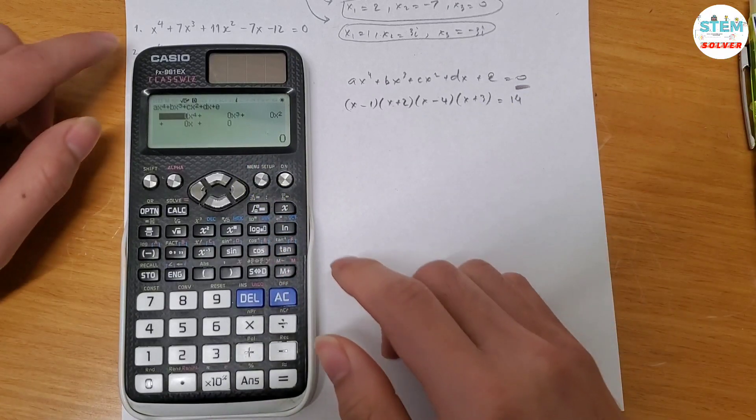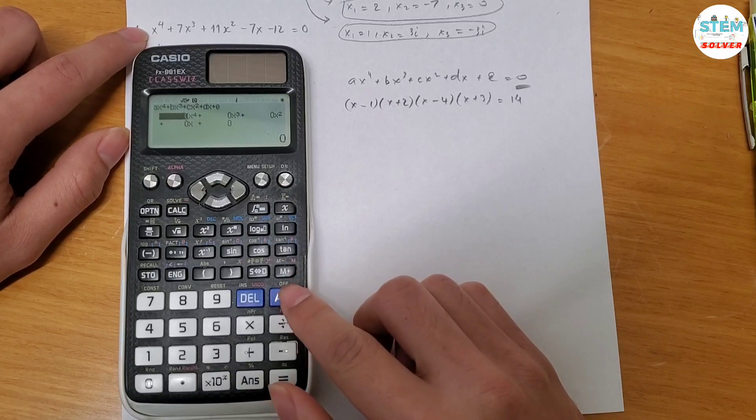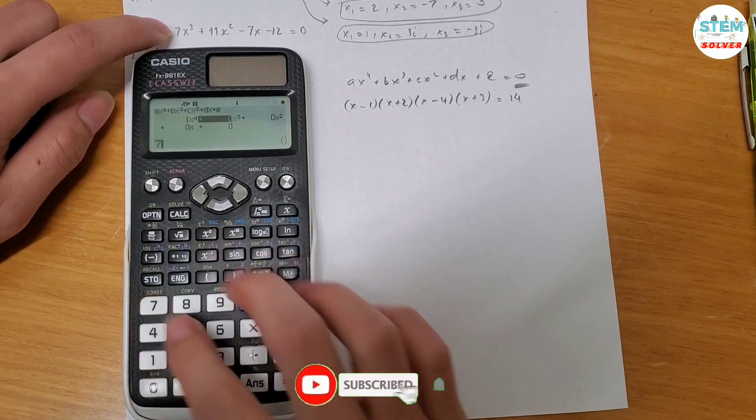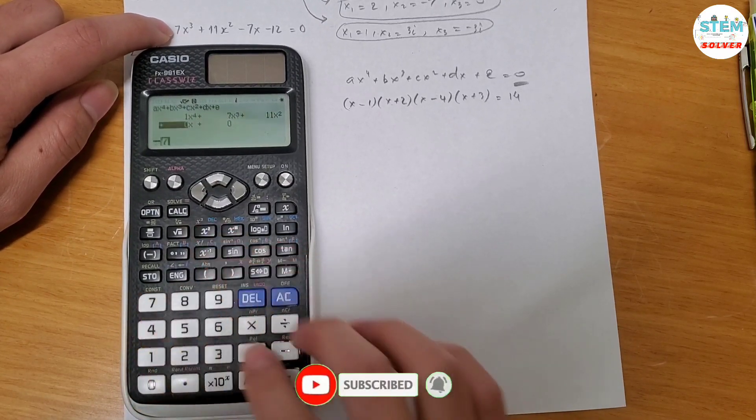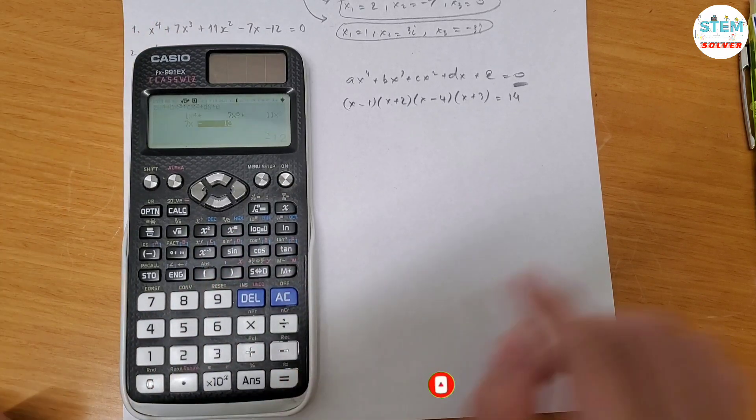Alright, now let's plug in the coefficients. So x to the fourth, I have 1. Then 7, 11, negative 7, negative 12. And then hit the equal sign.